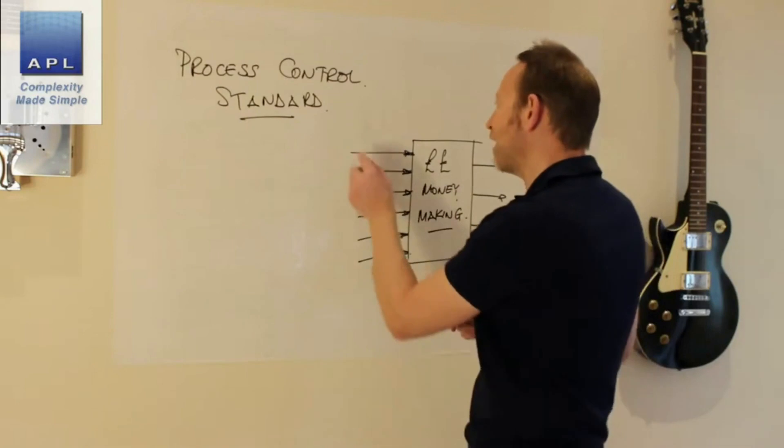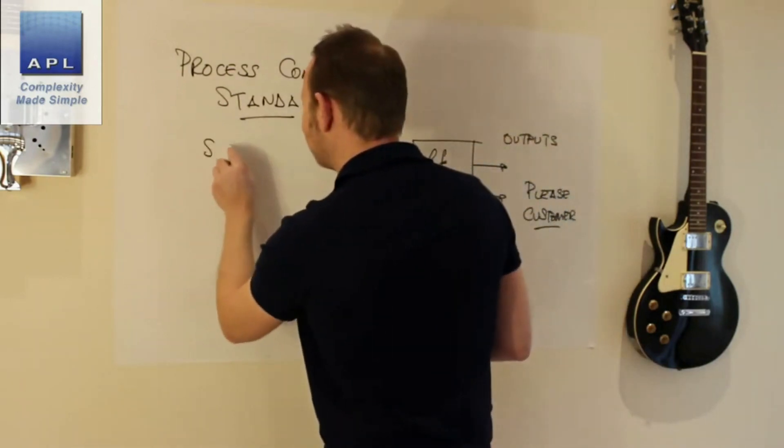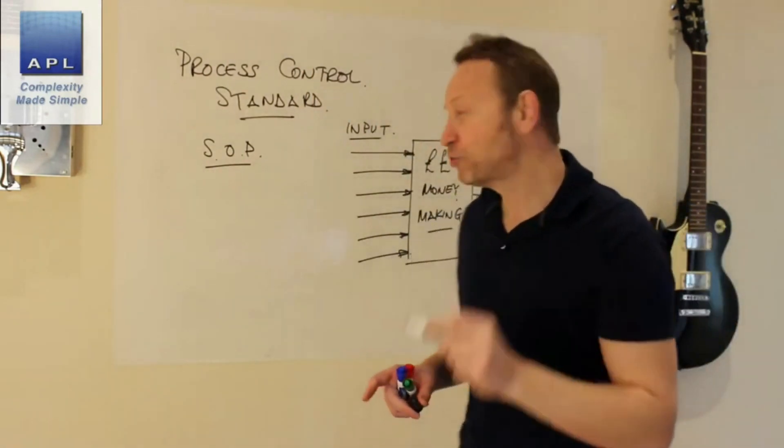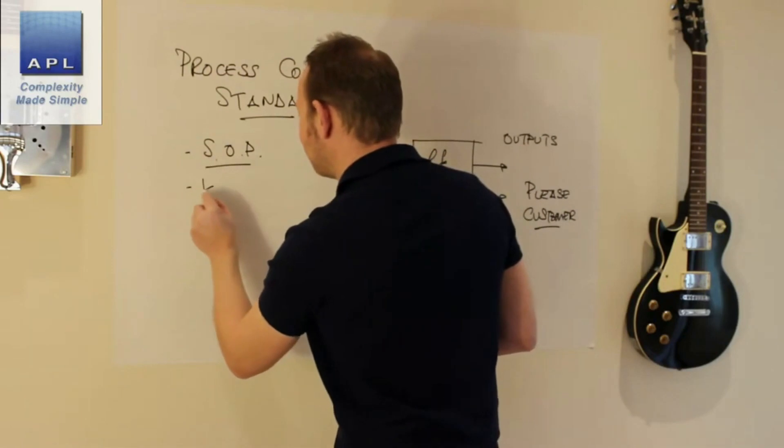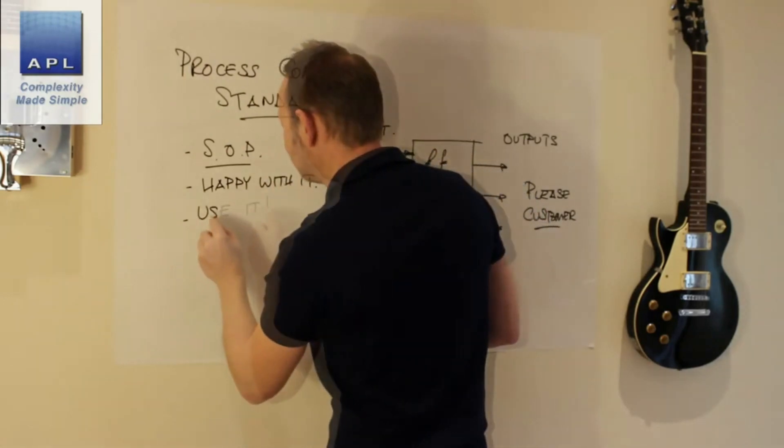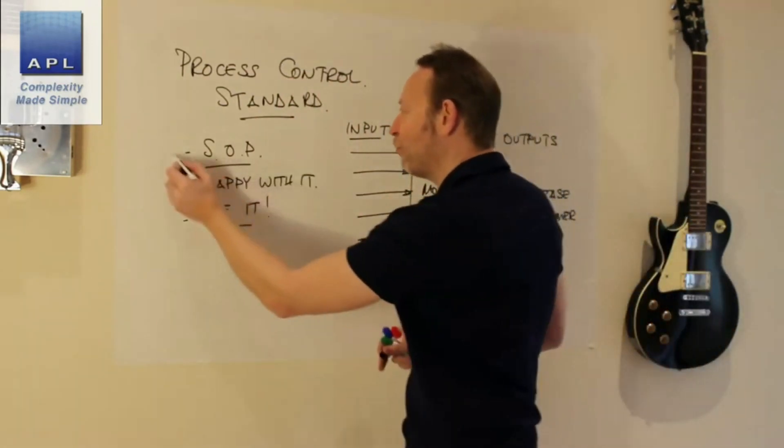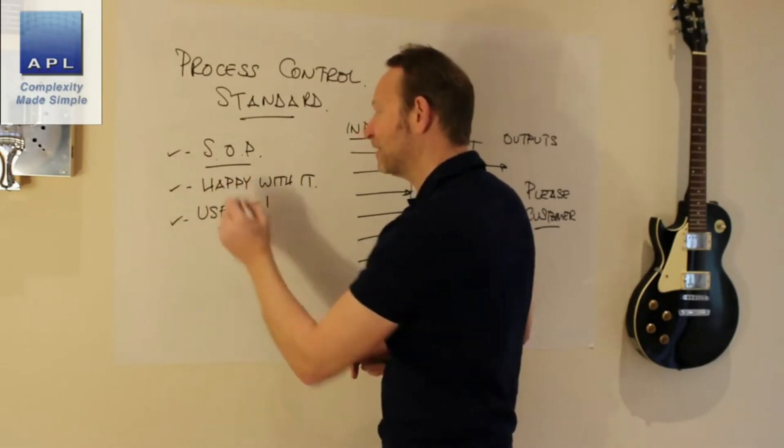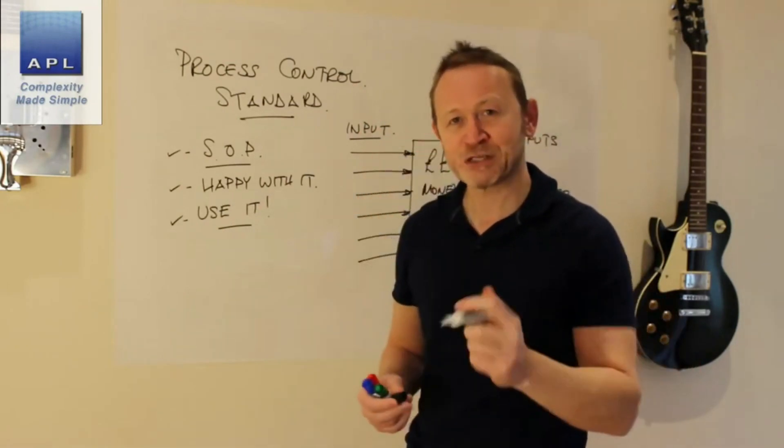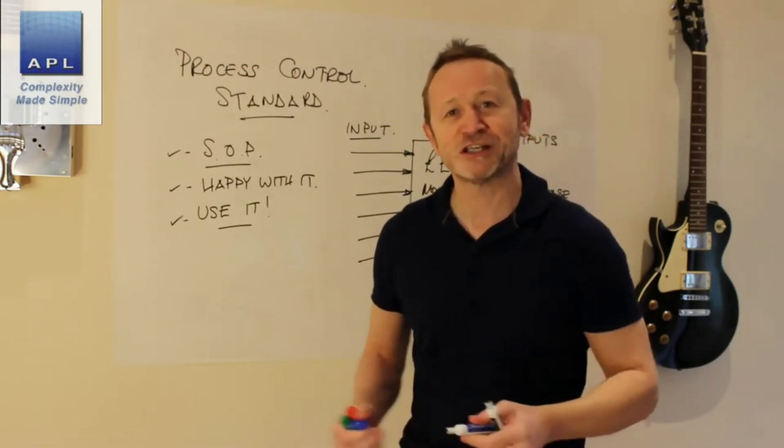To have an input under control, you should have a standard operating procedure. You should be happy with the standard, and finally, you should use it. If you don't get a tick in all three of those, then you don't have the input under control. You must get a tick in all three regions in order to say that the process is under control.